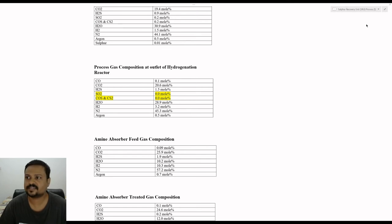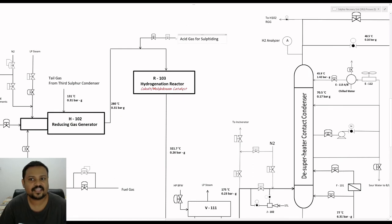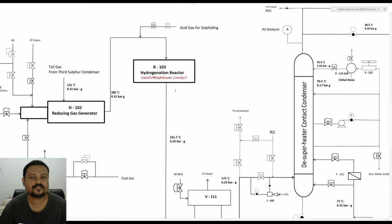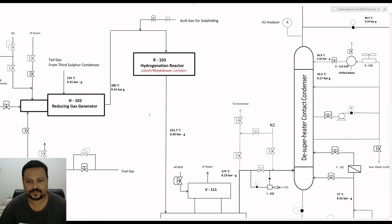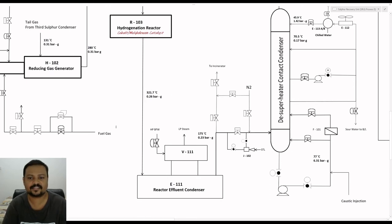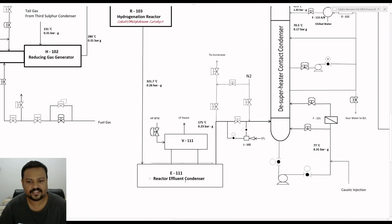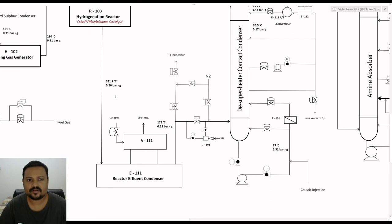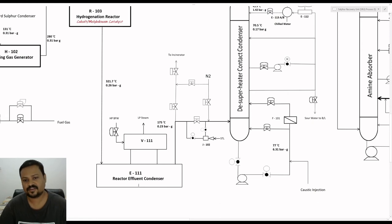There is acid gas sulfuring here, which is usually done during commissioning when the catalyst is used in the reactor for the first time — we will talk about that in detail in a separate video. The process gas comes out at a temperature of 320 degrees Celsius containing mostly H2S and 0% of sulfur dioxide, carbon sulfide and carbon disulfide. The gases will enter the reactor effluent condenser and the hot gases will be cooled up to 175 degrees Celsius at 0.2 bar. The reactor effluent condenser is the same as the sulfur condenser seen before, having an integrated steam drum and producing low pressure steam.